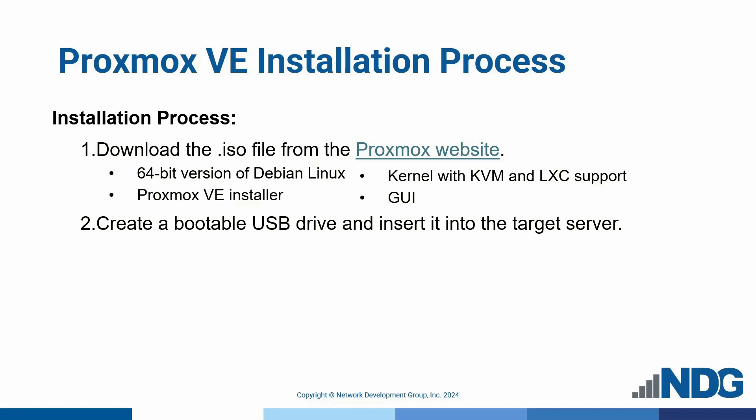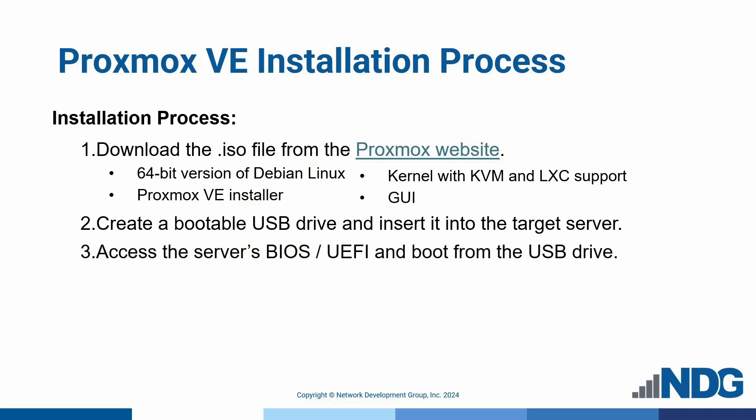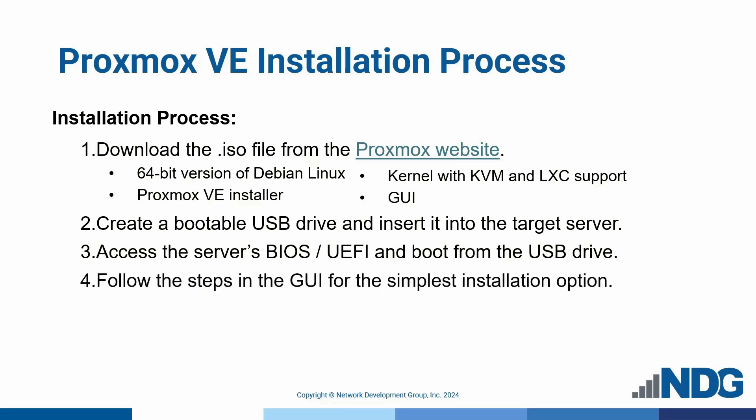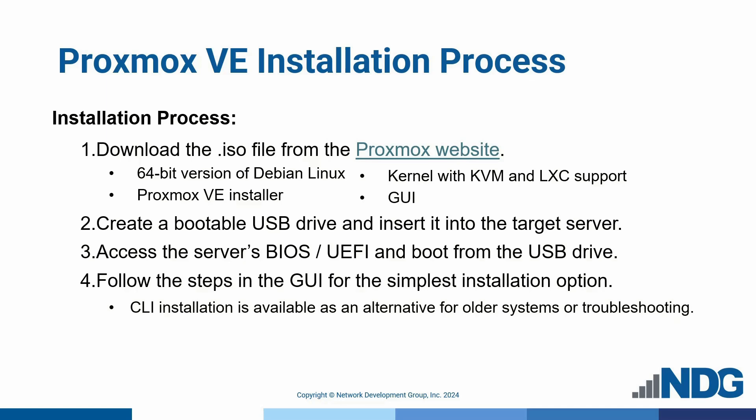The flash drive needs to have at least 1GB of storage available. When ready, insert it into a bare metal server ready to install Proxmox VE on. Third, access the server's BIOS or EFI settings and set it to boot from the USB drive. Finally, follow the installation steps in the GUI — this is the simplest and most user-friendly option, recommended for most users. CLI installation is also available and a good fallback if the GUI installation fails, particularly on older systems. However, it is less user-friendly. Following these steps will get you up and running with Proxmox VE quickly.